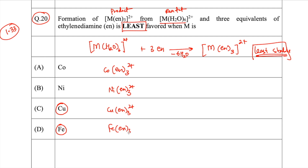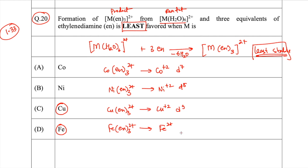Many people who answered option C (copper) used Jahn-Teller distortion as their reasoning. All the metals are in +2 oxidation state: cobalt is d⁷, nickel is d⁸, copper is d⁹, and iron is d⁶. Filling the electrons — in the low spin case for d⁶, d⁷, d⁸, and d⁹ — the only case with no Jahn-Teller distortion is nickel, because it has symmetric electron filling.